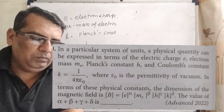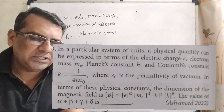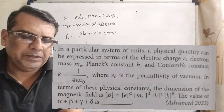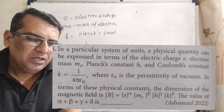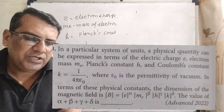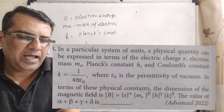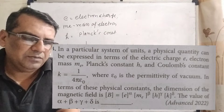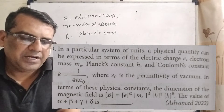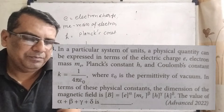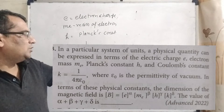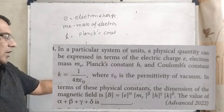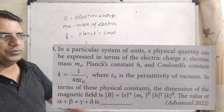Here is the question. In a particular system of units, a physical quantity can be expressed in terms of electric charge e, electron mass mₑ, Planck's constant h, and Coulomb's constant k = 1/(4πε₀), where ε₀ is the permittivity of vacuum. In terms of these physical constants, the dimension of the magnetic field is B = eᵅ mₑᵝ hᵞ kᵟ, and we have to find α + β + γ + δ.